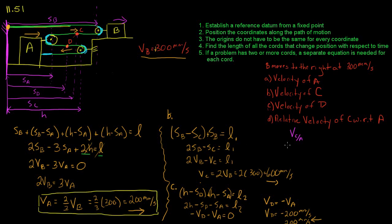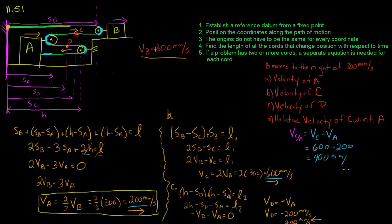The last part asks for the relative velocity of C with respect to A. This equals the velocity of C minus the velocity of A: 600 minus 200, which equals 400 mm/s. Since it's a positive number, the relative velocity of C with respect to A is 400 mm/s to the right.